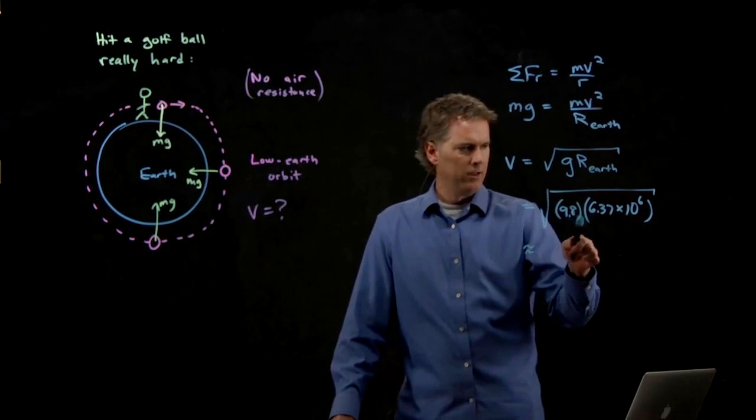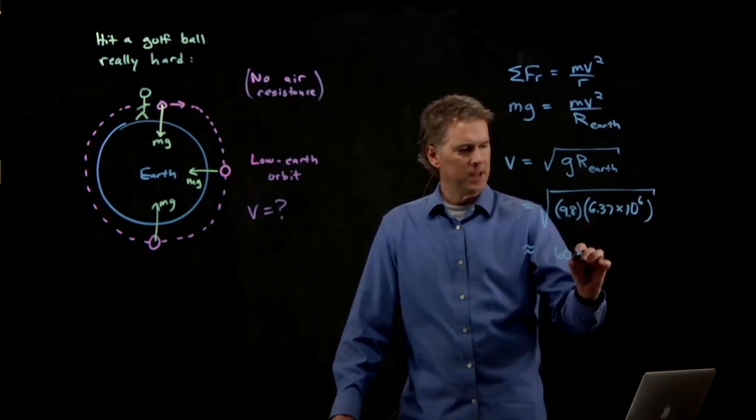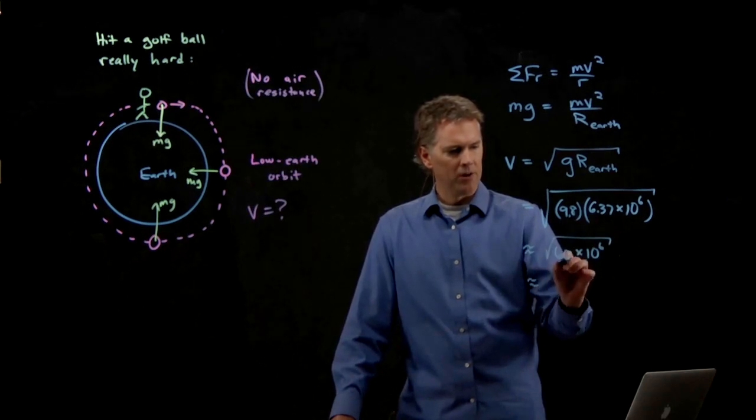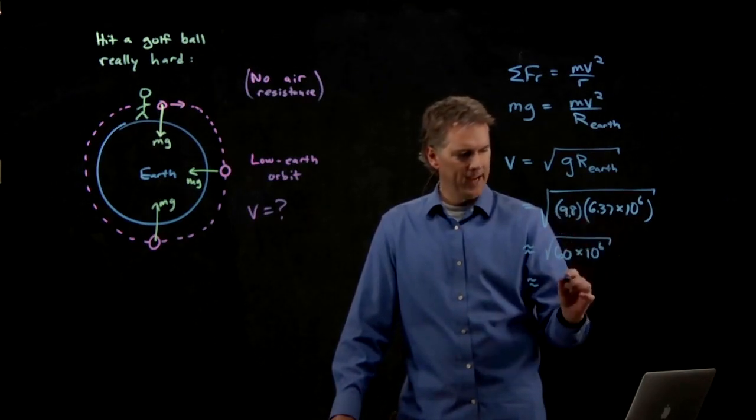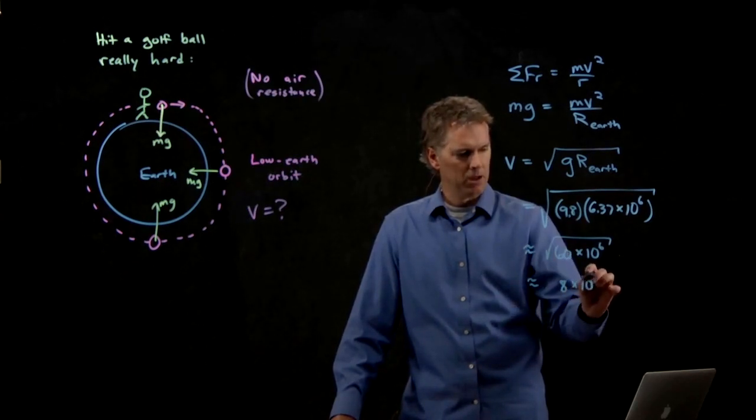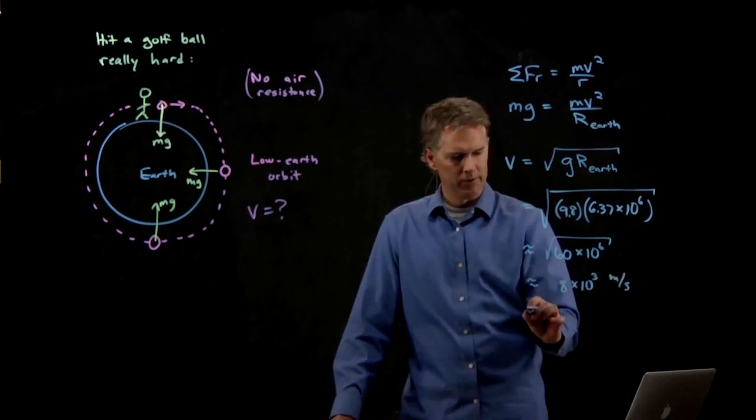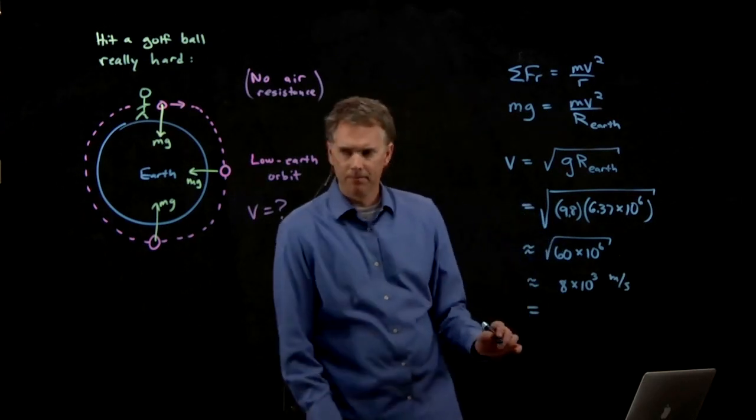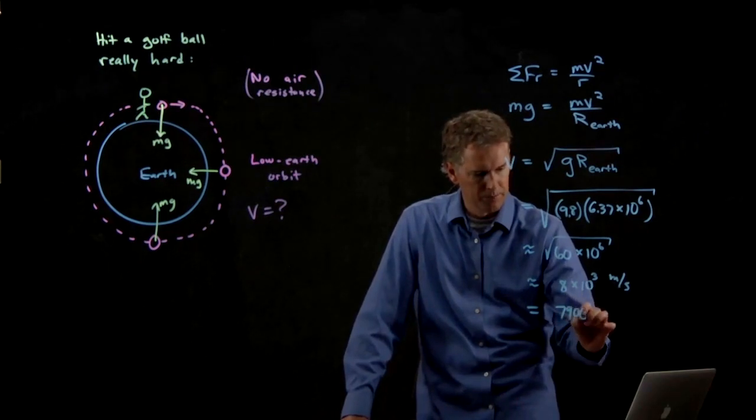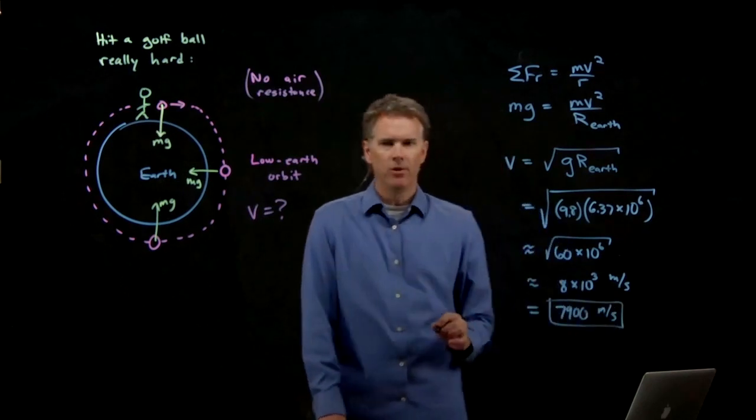So punch this into your calculator and tell me what you get. And let's just approximate it right here. This is 10. This is 6. So I'm going to get 60 times 10 to the 6. And then I have to take the square root of that. Square root of 60 is pretty close to 8, right? So that's got to be 8 times 10 to the 3. And the units are, of course, meters per second. Did anybody get an actual answer for that? 7,900. Okay. So we were pretty close on our guess.